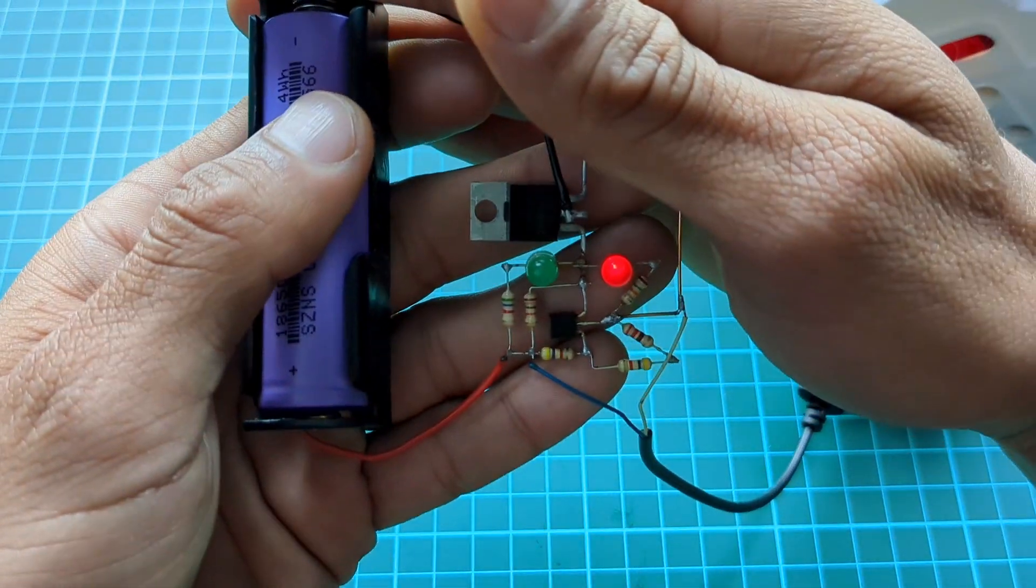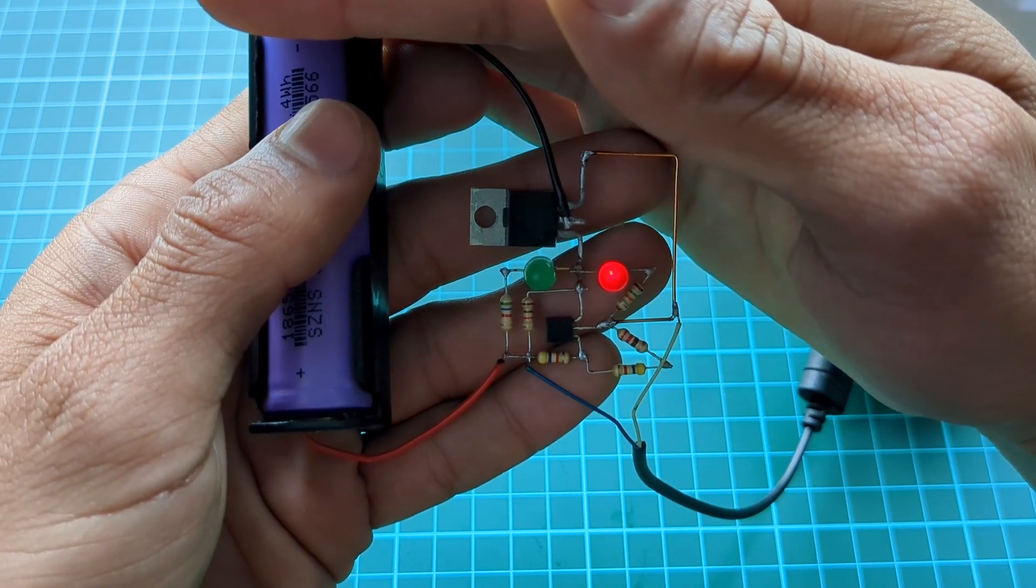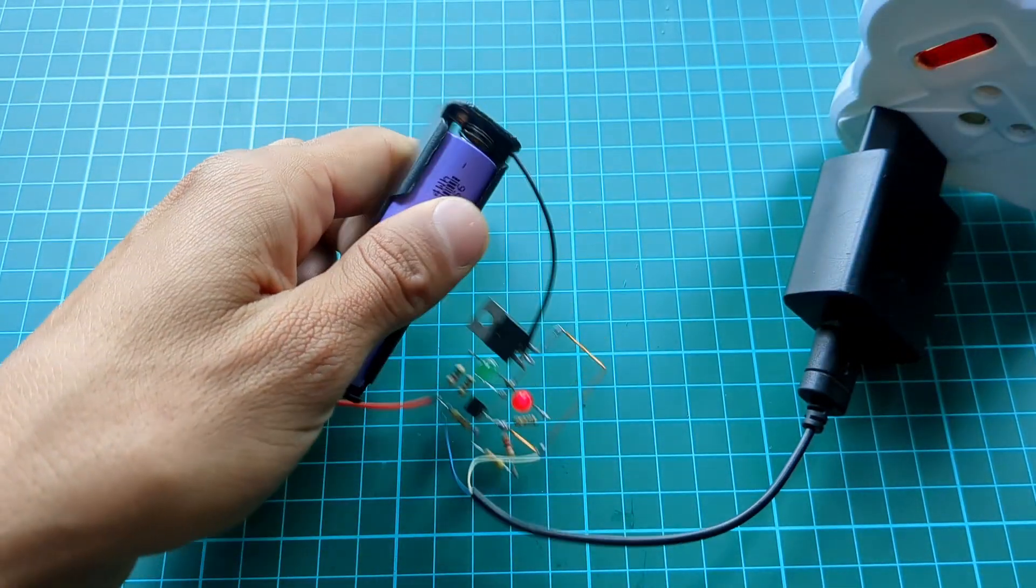Here you can see green LED turns off and red LED glows up, means battery is in charging mode.